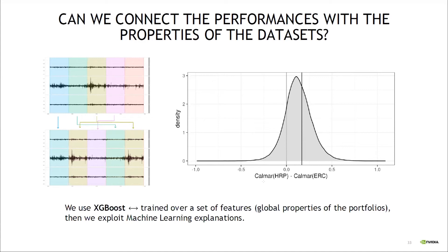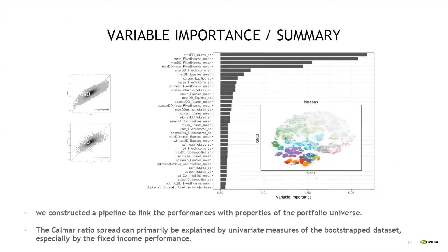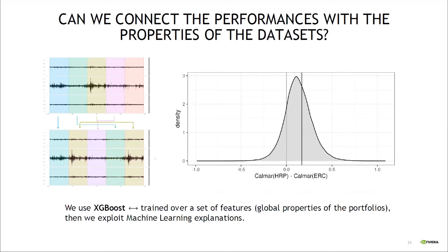Performance is measured with the Calmar ratio — return over drawdown — which incorporates the asymmetric drawdown risk measure. The distribution shows that HRP clearly dominates: in most cases, HRP significantly outperforms equal risk contribution. The next step is to take each of those 100,000 datasets and measure properties such as average correlation, average risk, average return, and drawdowns. We get many features describing the statistical properties of the data — these serve as training data.